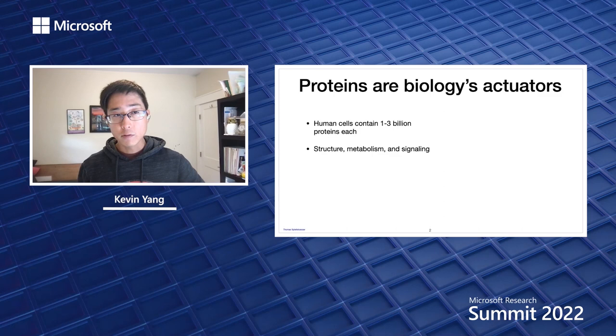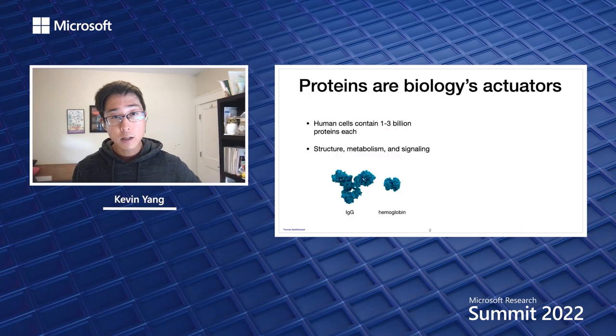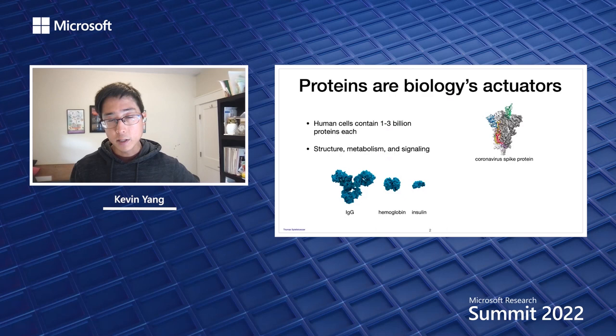Some examples: IgG is part of your adaptive immune system. Hemoglobin carries oxygen in your blood cells. Insulin regulates your blood sugar. The coronavirus spike protein has been famous recently because it allows the virus to enter your cells through the ACE2 receptors in your lungs. And luciferase is a fun one because it makes firefly butts glow.